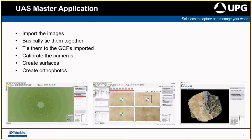UAS Master will also calibrate the cameras — it reverse-engineers the camera calibration to help optimize the surface generation process. It can then be used to create surfaces and orthophotos to send back to TBC, or you don't actually need to bring data back into TBC — when you've generated the surface and orthophoto, they're stored in the project folder and you can just access them there and send them on if you want.